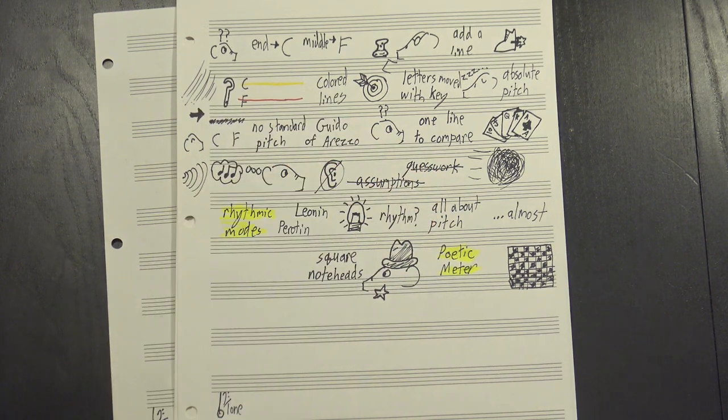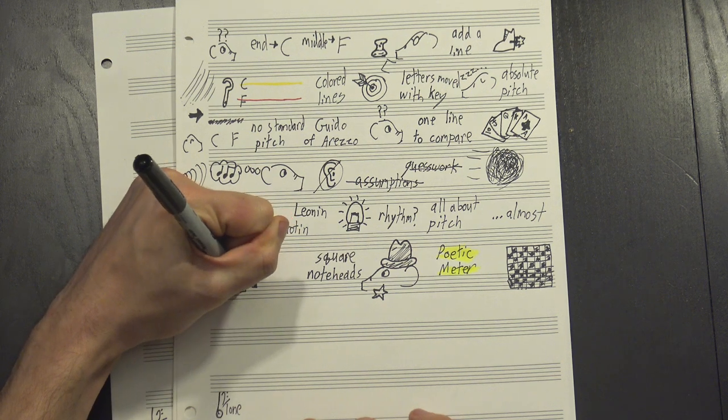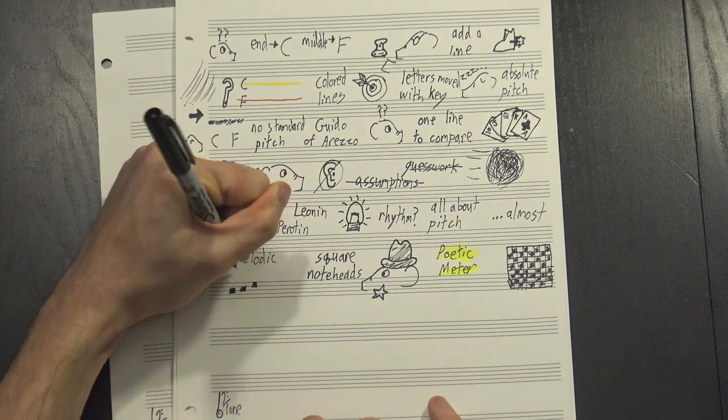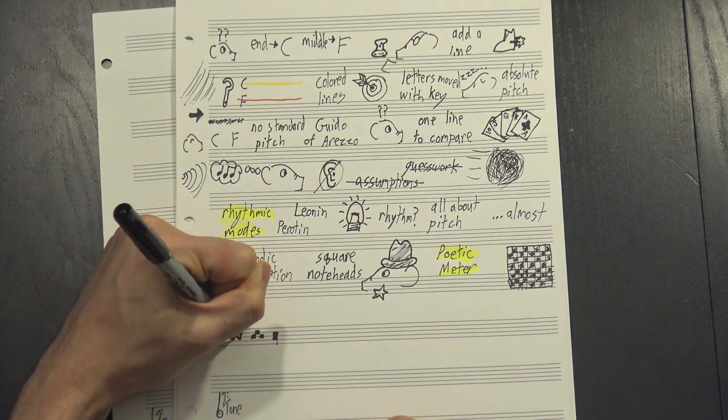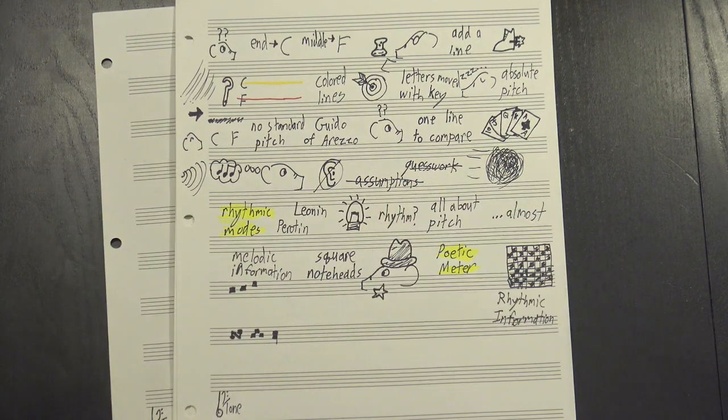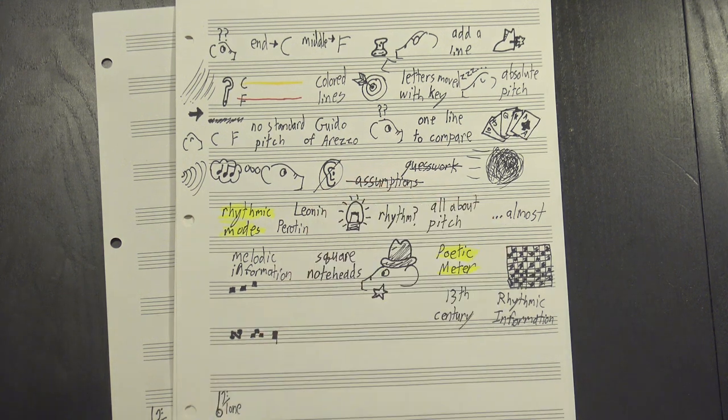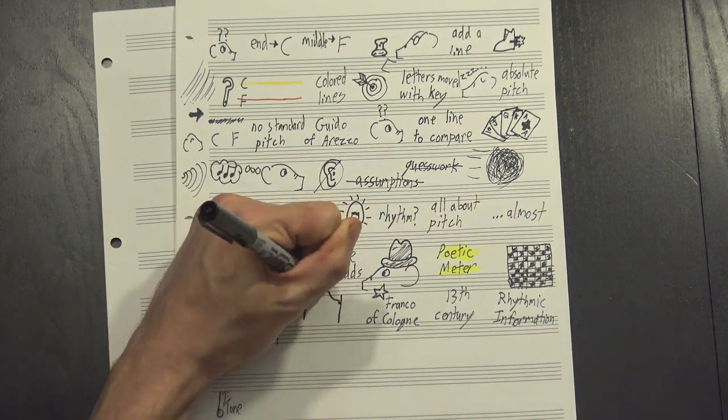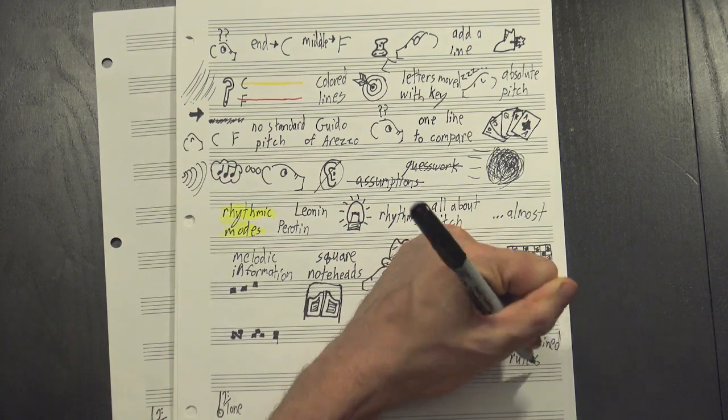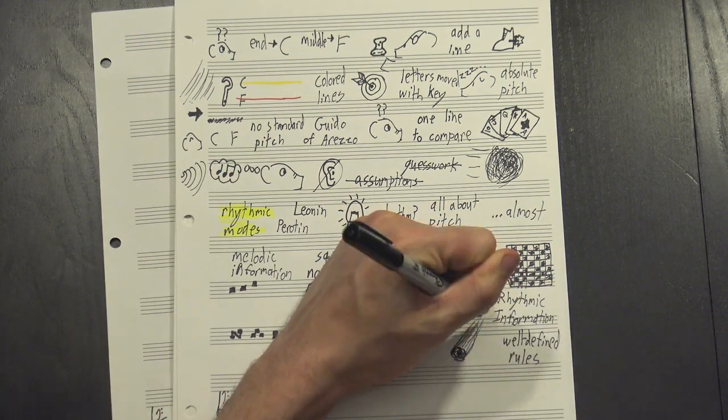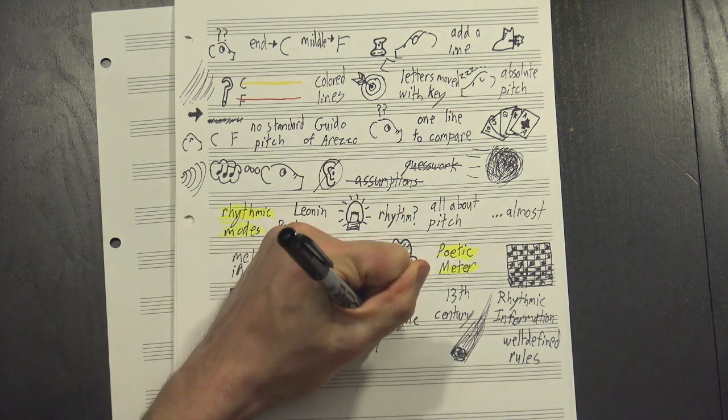At roughly the same time, square noteheads began to appear, marking clear locations for the various neumes. These noteheads conveyed melodic information, taking various shapes depending on the ornamentation of the phrase. The idea of using them to mark rhythmic information came later in the 13th century, from Franco of Cologne. His symbols were imprecise by modern standards, but they were still governed by well-defined rules, vastly expanding the options for conveying rhythm.